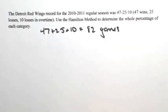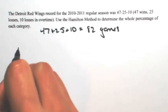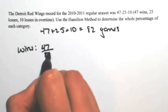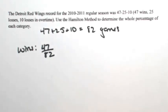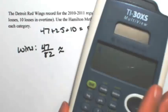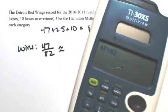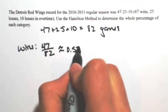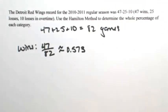So now we're going to figure out what percentage each category takes. So for the wins, 47 out of the 82 were wins. So 47 divided by 82 is about 0.573. So about 57% were wins.